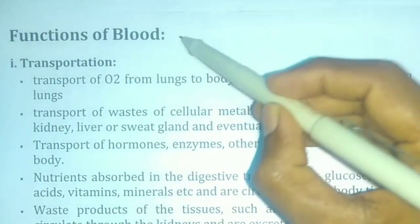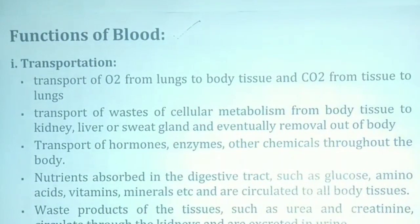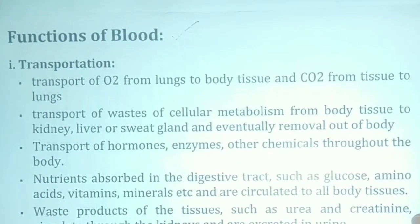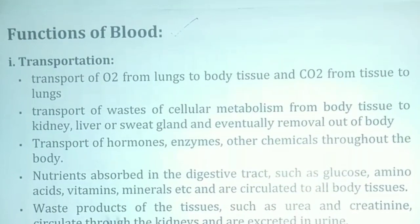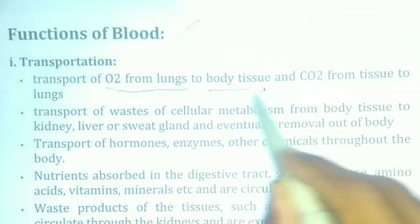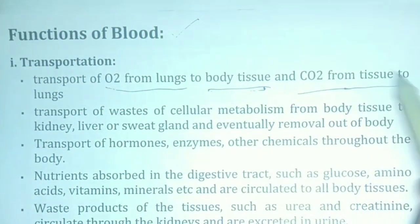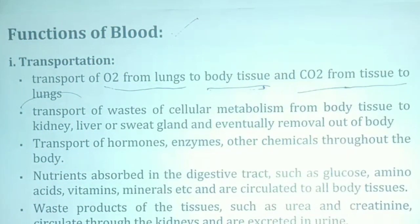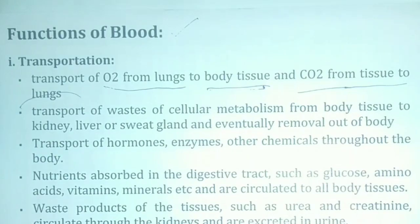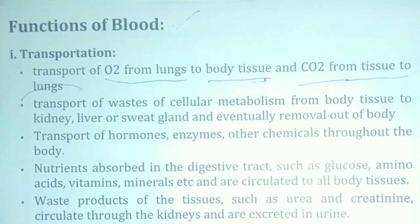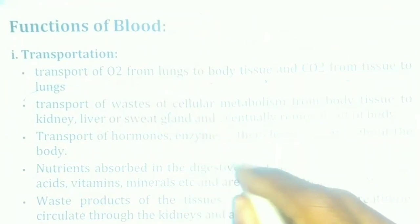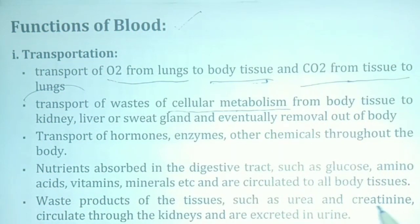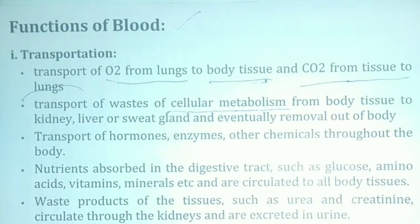The functions of the blood. Blood is used for transport. It transports oxygen from the lungs to the tissues, and carbon dioxide from the tissues to the lungs. It also transports the waste products of cell metabolism.